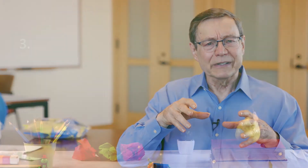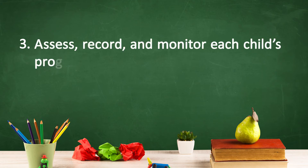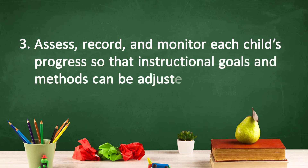For example, use a wooden cube to make your own die with only one, two, three on the six faces. The third way to carry out Recommendation 3 is to assess, record, and monitor each child's progress so that instructional goals and methods can be adjusted as needed. It's important to continue the flow of progress monitoring on an ongoing basis. The best way to do this is to integrate it fully into the regular day using curriculum-embedded assessment.